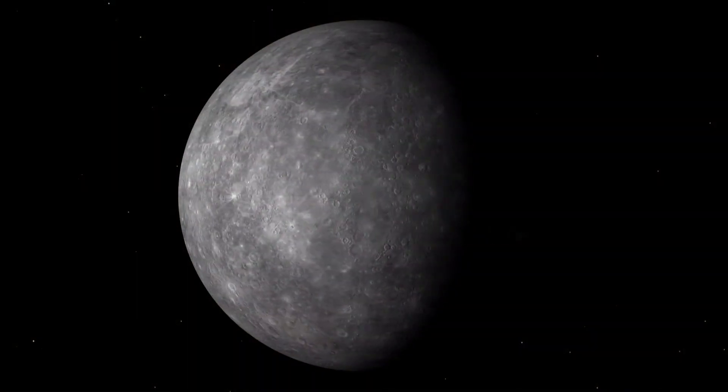Mercury's axis has the smallest tilt of any of the solar system's planets. Its orbital eccentricity is the largest of all known planets in the solar system.